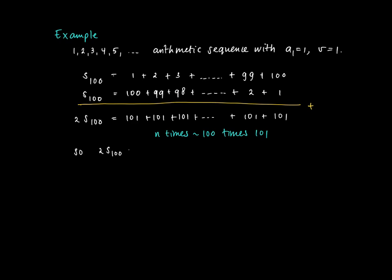So actually we find that 2 times S_100 is 100 times 101. So this indeed equals 100 times the first element and the last element. The first element is 1, a_100 equals 100. So we find as the partial sum S_100 equals 5050.